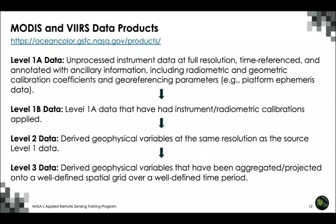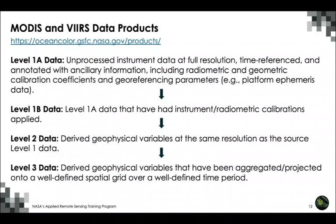Levels of data: Level 1A data are unprocessed instrument data at full resolution, time-referenced and geolocated. Level 1B data are radiometrically calibrated radiances at full resolution. These are used to derive Level 2 data, which are geophysical variables at the same resolution as the source — such as chlorophyll-A, sea surface temperature, and colored dissolved organic matter. Level 3 data are then derived by aggregating or projecting onto a well-defined spatial grid over a defined time period, typically at lower resolution. In this webinar we will focus on Level 1 and 2 data.